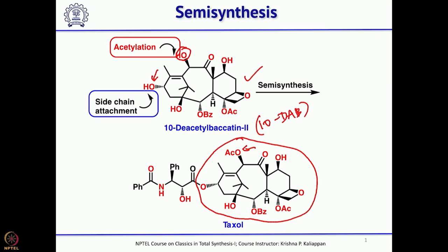This 10-DAB isolated from the leaves of Pacific yew trees could be used for making several analogues of Taxol. Some of the analogues of Taxol were found to be more active than the parent compound Taxol - that is one advantage. The second advantage is that the leaves of Pacific yew trees grow faster, so you can remove leaves, isolate 10-DAB, and convert that into Taxol. After some time the leaves grow back. This way you do not have to cut the Pacific yew tree to make Taxol.